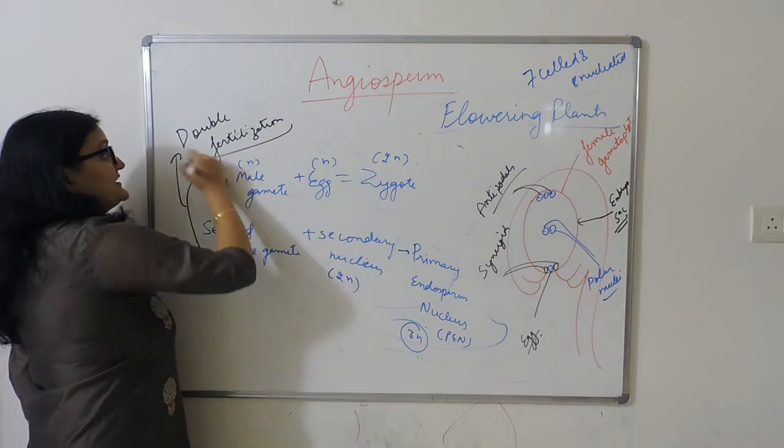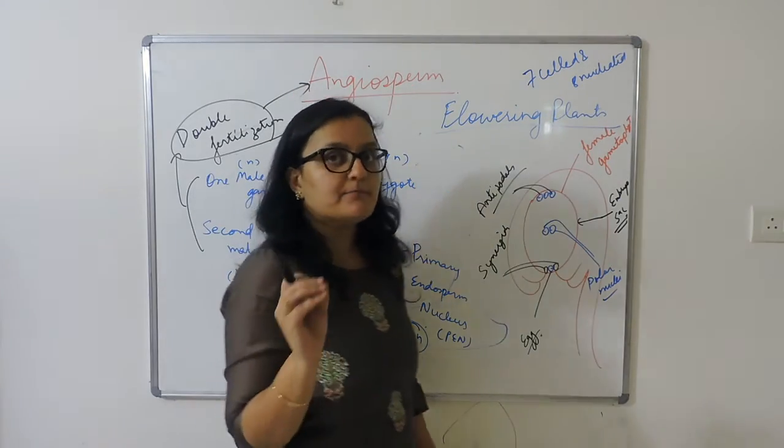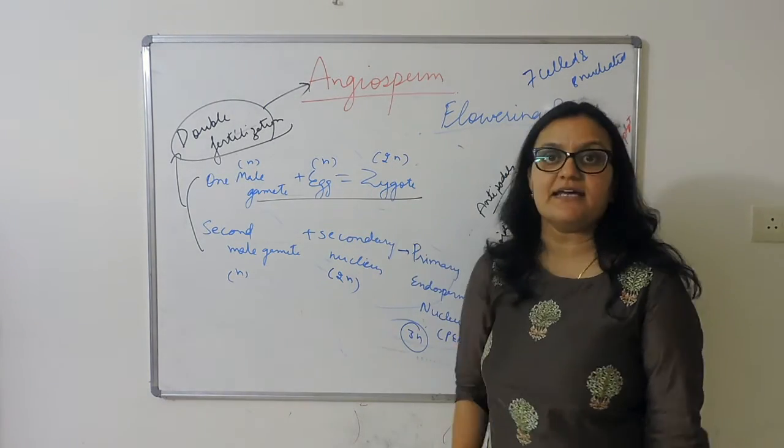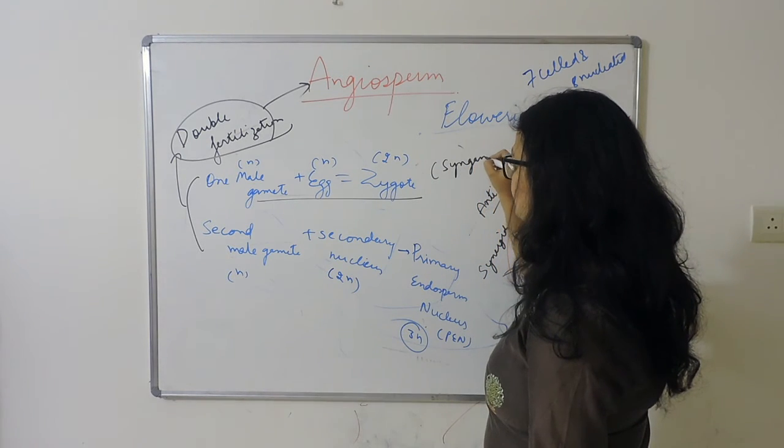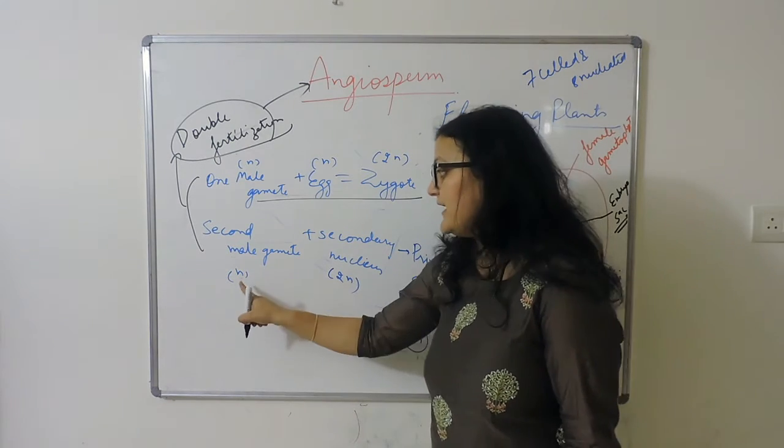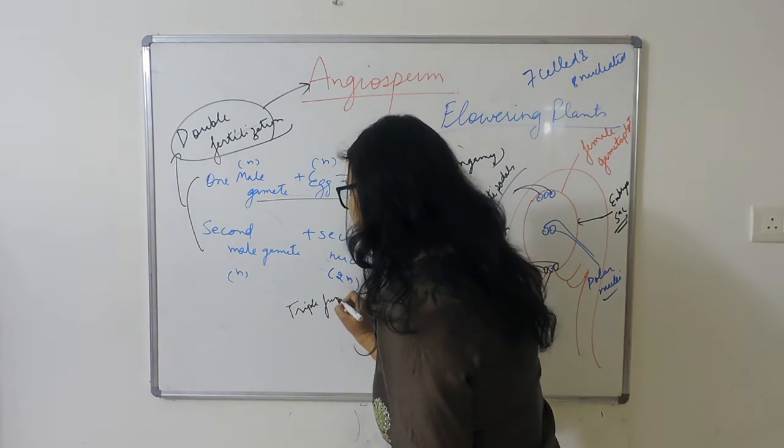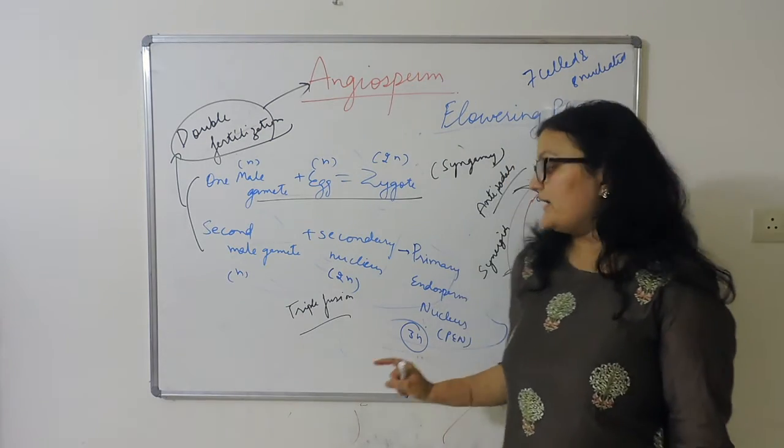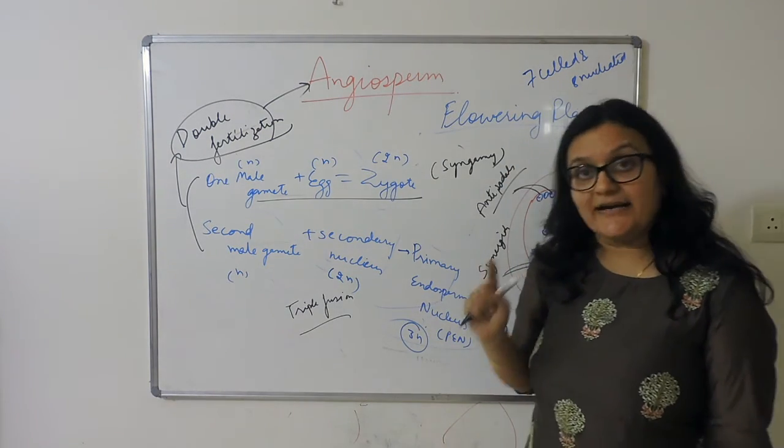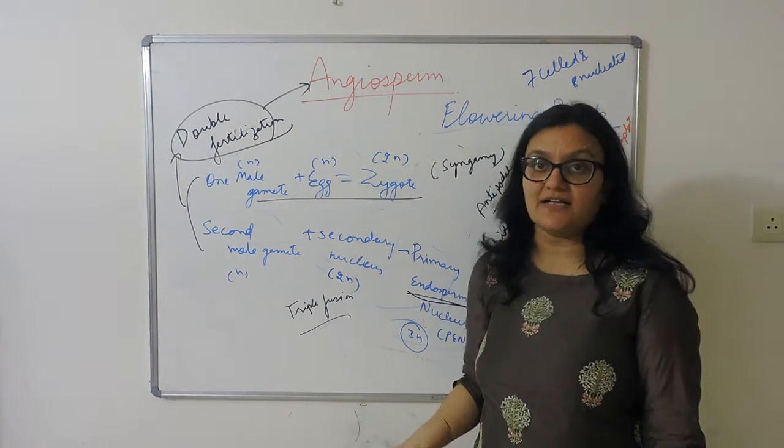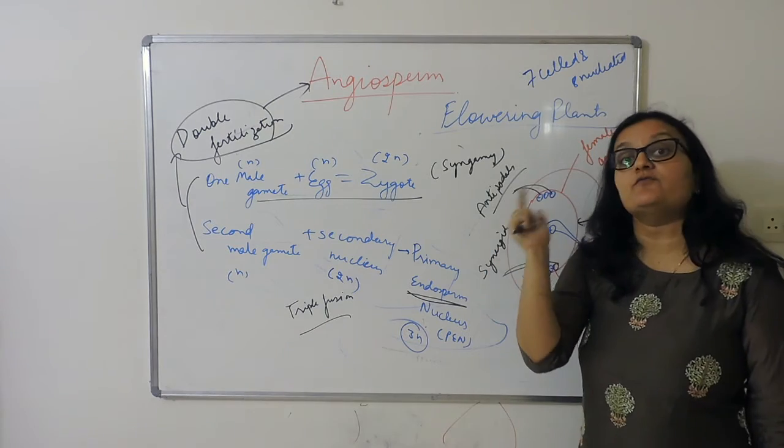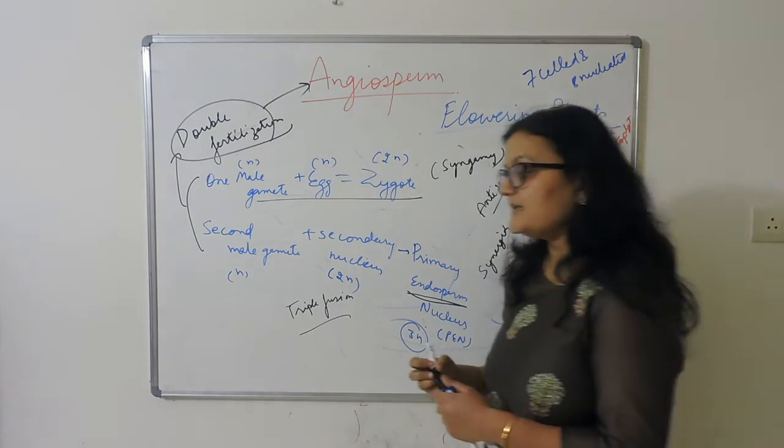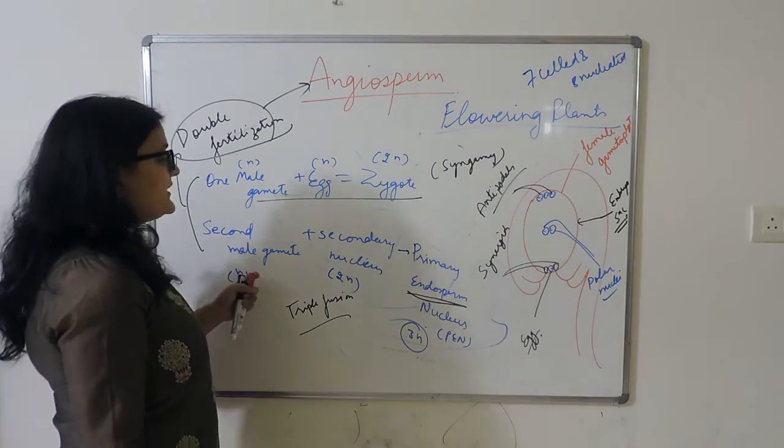Because of the involvement of two fusions, this is known as double fertilization. This is the unique characteristic of angiosperms. Double fertilization - what is the fusion of male and female gametes? We call this syngamy, and this is triple fusion - two nuclei and one nucleus. So double fertilization equals syngamy plus triple fusion. Note that the endosperm after fertilization becomes triploid, but in the case of gymnosperms before fertilization it is haploid. This double fertilization is unique to angiosperms.